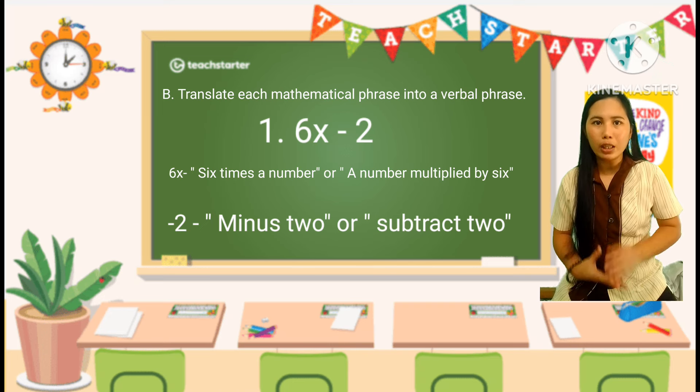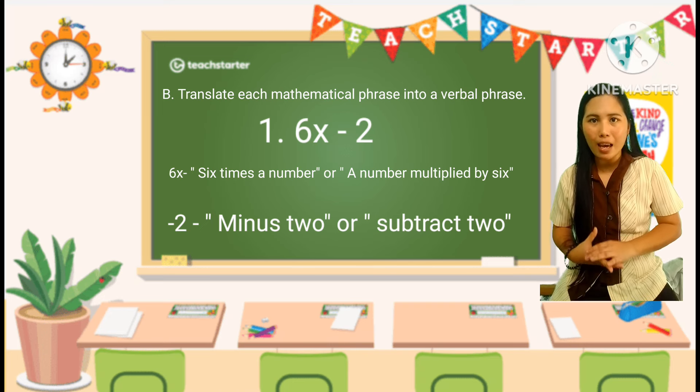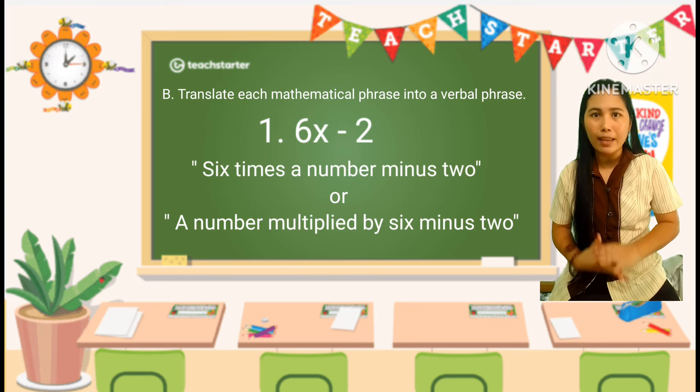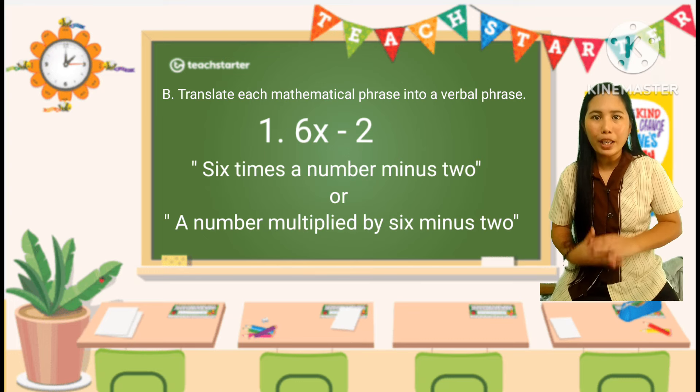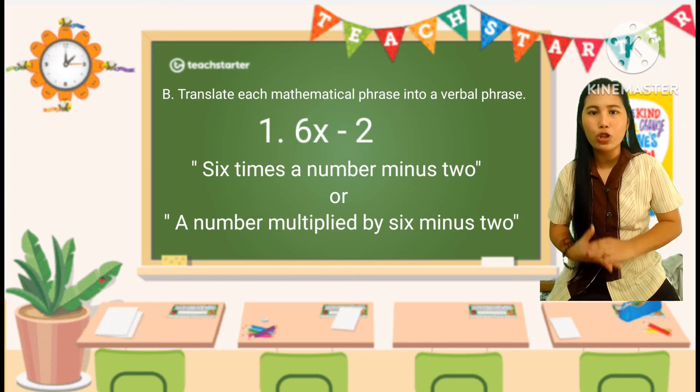Combine the descriptive terms. Putting it together, the verbal phrase for 6x minus 2 is 6 times a number minus 2, or a number multiplied by 6 minus 2.